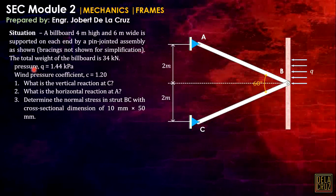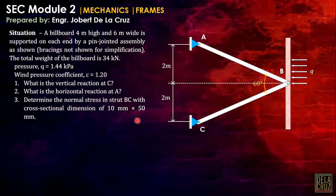We have this wind pressure Q that is 1.44 kPa, and the coefficient of wind C is 1.2. Calculate the vertical reaction at C, the horizontal reaction at A, and determine the normal stress in strut BC with cross-sectional dimension 10 mm by 50 mm.